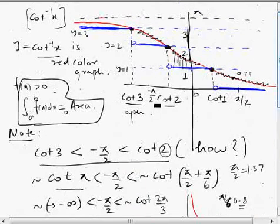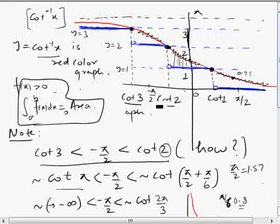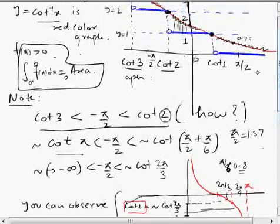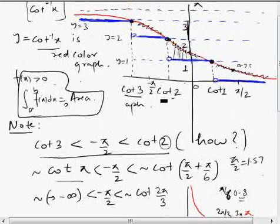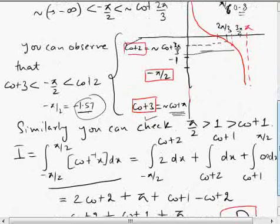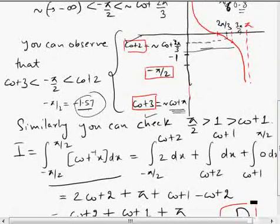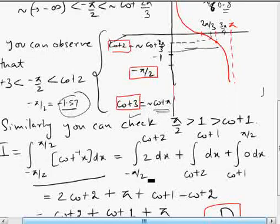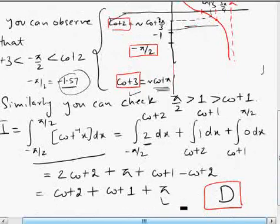Once we have established that -π/2 lies between cot3 and cot2, we can split the definite integral into parts: from -π/2 to cot2, from cot2 to cot1, and from cot1 to π/2. From the graph, ⌊cot⁻¹x⌋ equals 2 in the first interval, 1 in the second, and 0 in the third, which gives us the values to calculate.